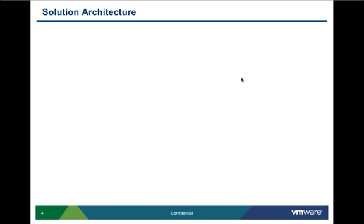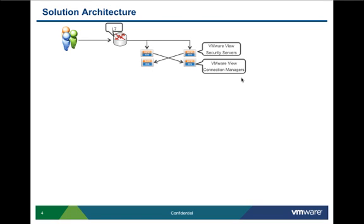Jumping into the architecture, I'm going to walk you through the various elements of the solution as we built it in the lab. Feel free to add or remove any components for your design as you see fit. The desktop session is initiated by the user, and the request is first met by the load balancer at the edge of the network. The load balancer looks at the source IP, user ID and password, and forwards it to the right site — either the corporate HQ, co-location center, or the third-party site.